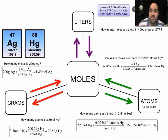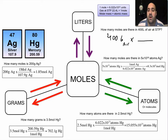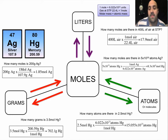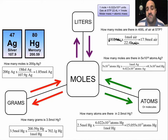How many moles are there in 400 liters of air at STP? We have 400 liters of air and want to go into moles. So: 400 liters of air times — liters of air goes down here, moles goes up top. The relationship between moles and liters at STP: one mole is always 22.4 liters, always — like saying there are 12 inches in a foot. So 400 times 1 divided by 22.4. Liters of air cancel and we're left with moles of air: 17.9 moles of air.